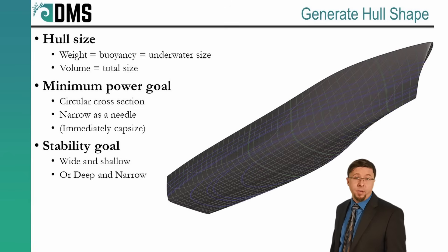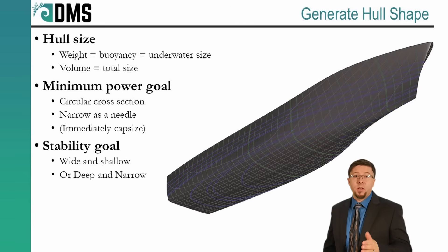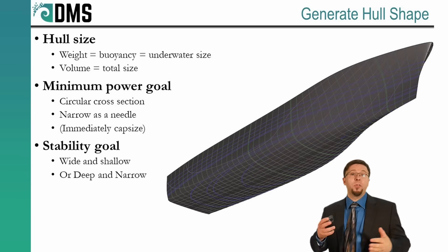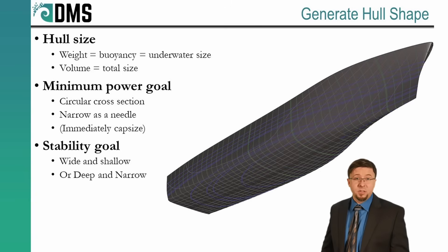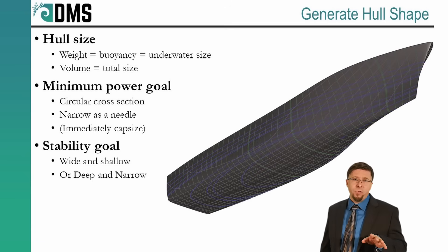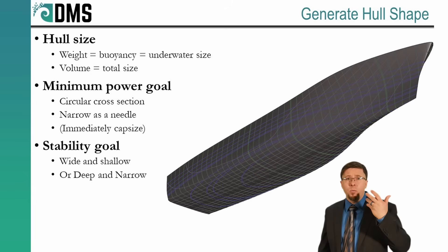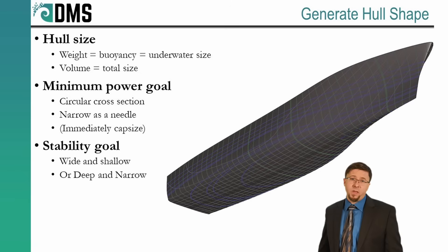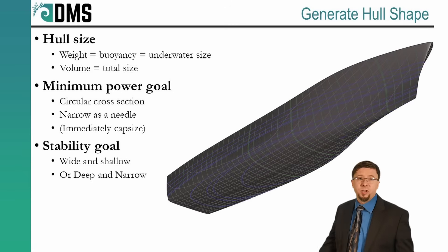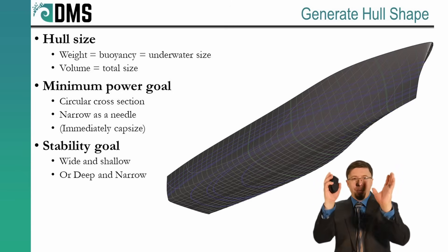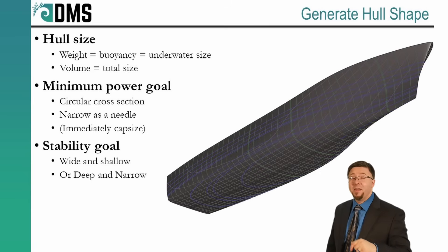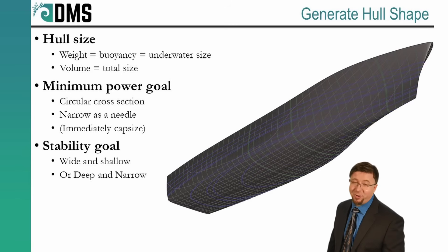Now we can begin designing the hull shape. The weight controls the underwater volume of the hull, but a normal hull also includes a large portion above the water. The volume requirements control the total volume of the hull — the under and above water sections. Naval architects use several different coefficients and equations to give hints about the appropriate shape. But the general shape of the ship is always a contest between competing needs. To minimize fuel consumption, we want the hull cross-section to form a perfect circle and be as narrow as a needle lengthwise. But any ship with that shape will flip over the minute it touches the water — we call that capsizing. That's a bad day.